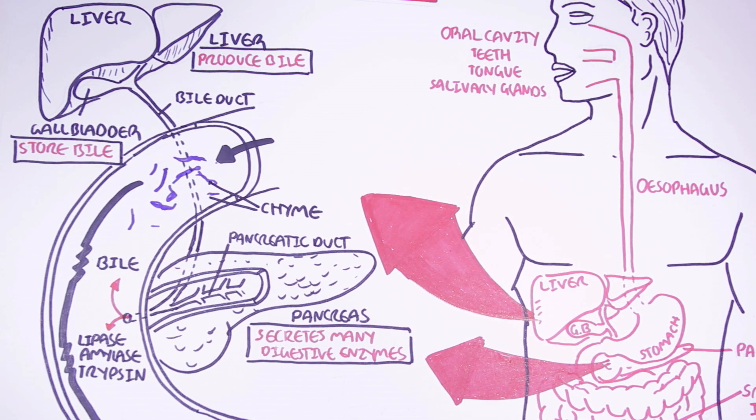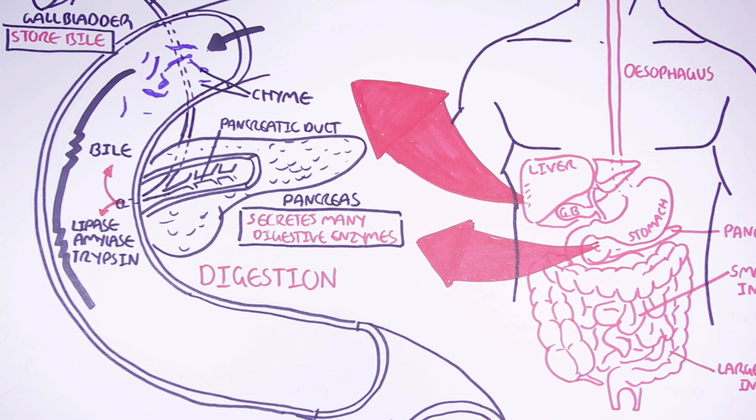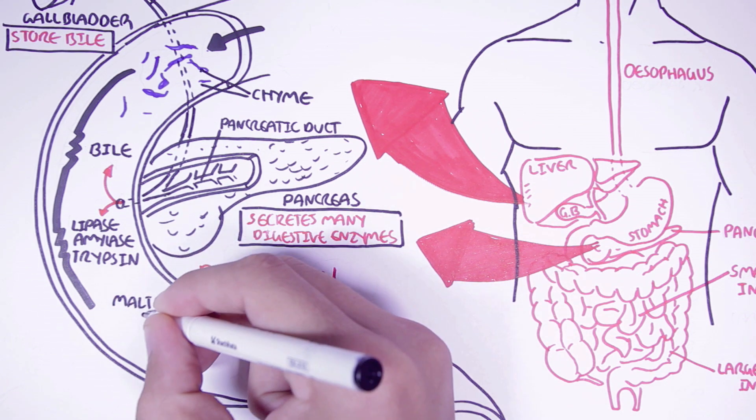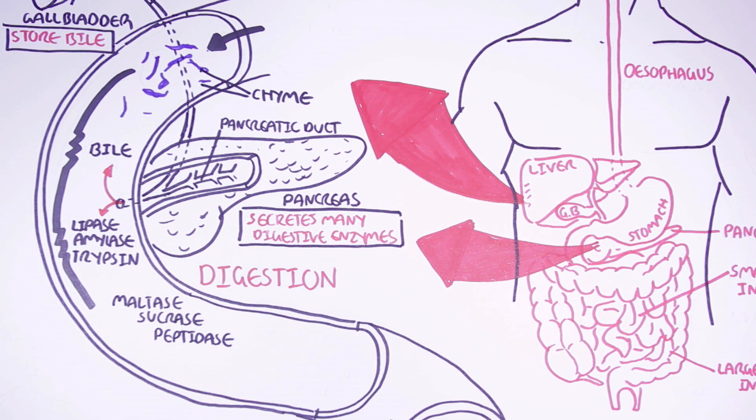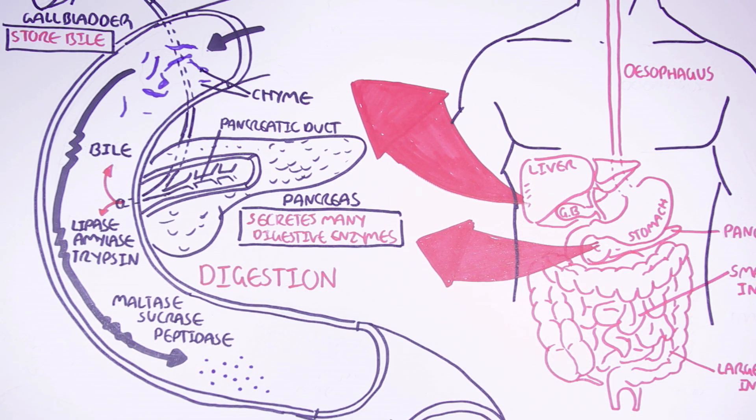So the chyme will encounter all these enzymes and will be digested further. The small intestine itself have some enzymes called brush border enzymes that are actually found on the cell membranes. These brush border enzymes include maltase, lactase, sucrase, and peptidase. The brush border enzymes are sort of the final step of food digestion. The chyme will encounter all these enzymes and chemicals which will further digest it into smaller molecules.